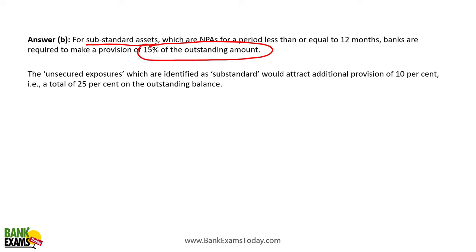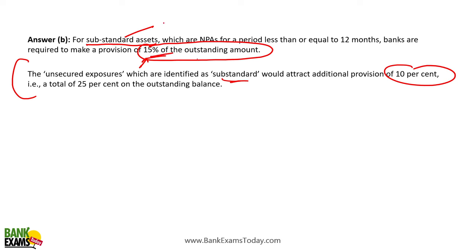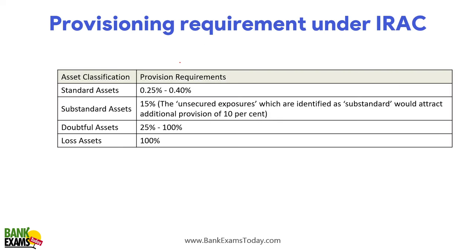A substandard asset is an NPA which is overdue for more than 90 days but less than a year. If the substandard asset is secured, provisioning is 15% of the outstanding amount. For unsecured exposures identified as substandard, an additional provision of 10% is required, making it 25% total for unsecured substandard assets.